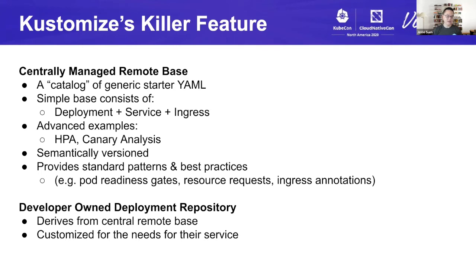As a platform team, we provide what I call a catalog of generic starter YAML. In a simple example, the developer gets something like a web service comprised of a deployment, a service, and an ingress. Later, if the developer wants to leverage more advanced capabilities of Kubernetes, they can include an HPA base or a canary analysis base as part of their service. We semantically version this remote base so that developers can upgrade to new versions at their own pace. All of this gives us standard distribution of patterns, best practices, and things like pod readiness gates, resource limits, and ingress annotations.